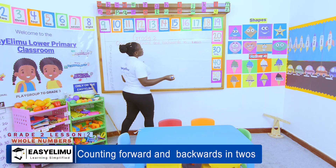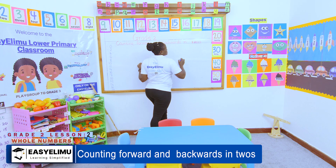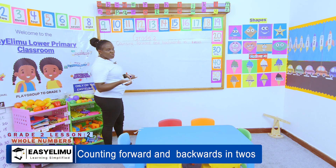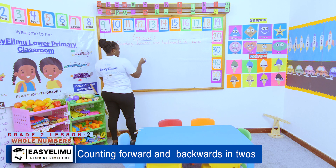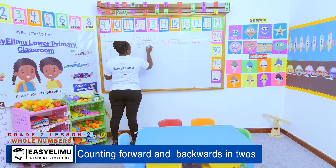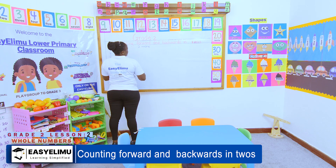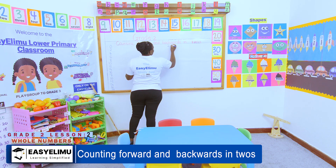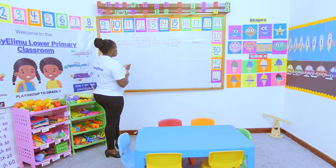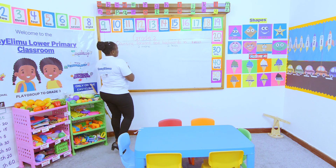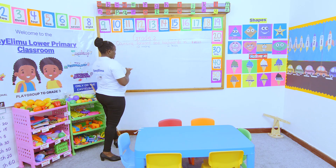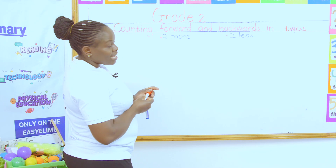So you have heard we are counting in twos. And what does two mean? This is two more, two less. Two more — when you're counting forward. Two less — when you're counting backward. Forward is two more, meaning plus two. Backward is two less, meaning minus two.